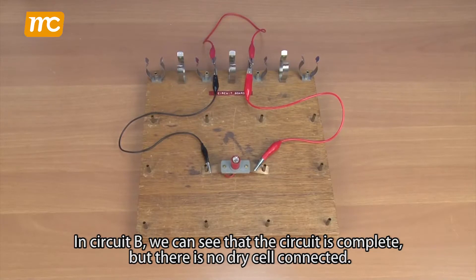In circuit B, we can see that the circuit is complete, but there is no dry cell connected.